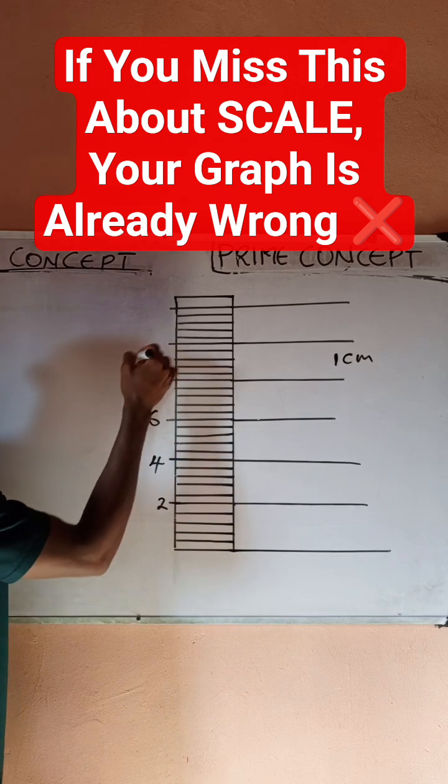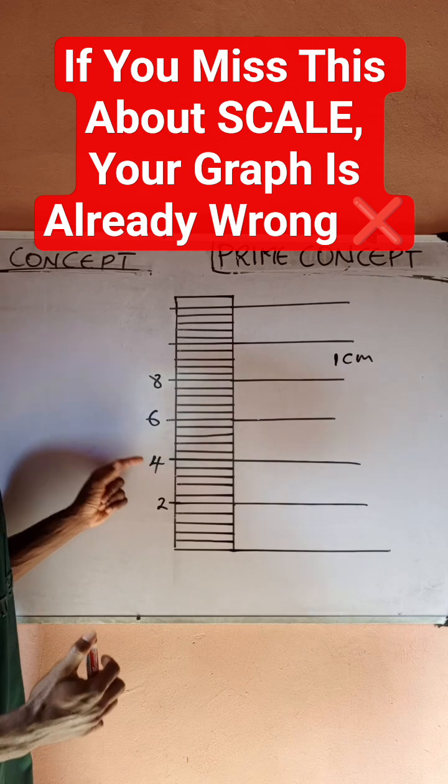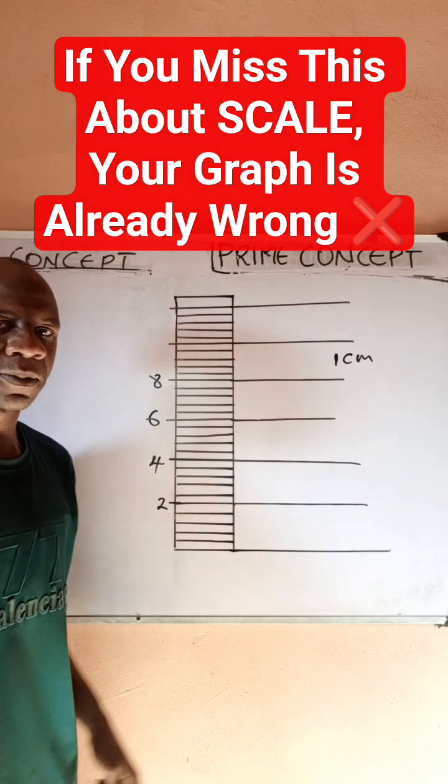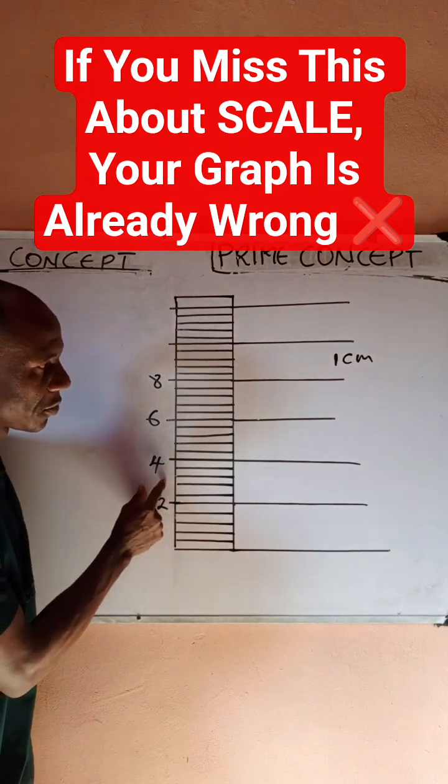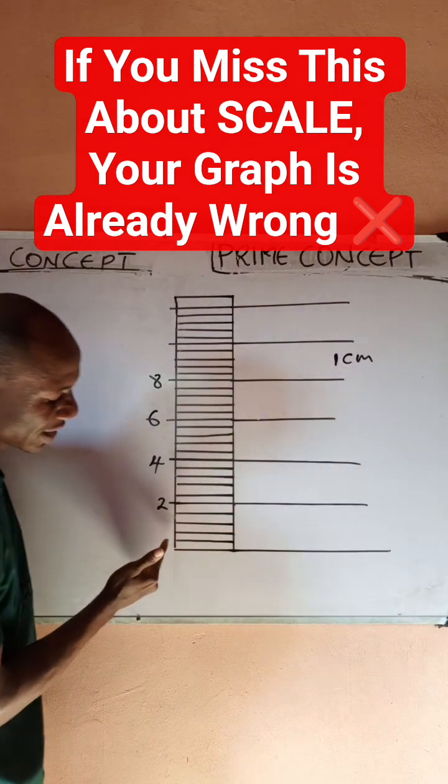So you notice that this number increases by a value of 2. What it means is that the scale I have chosen for this graph is one centimeter, because it is an interval of one box, one centimeter represents two units on the vertical axis.